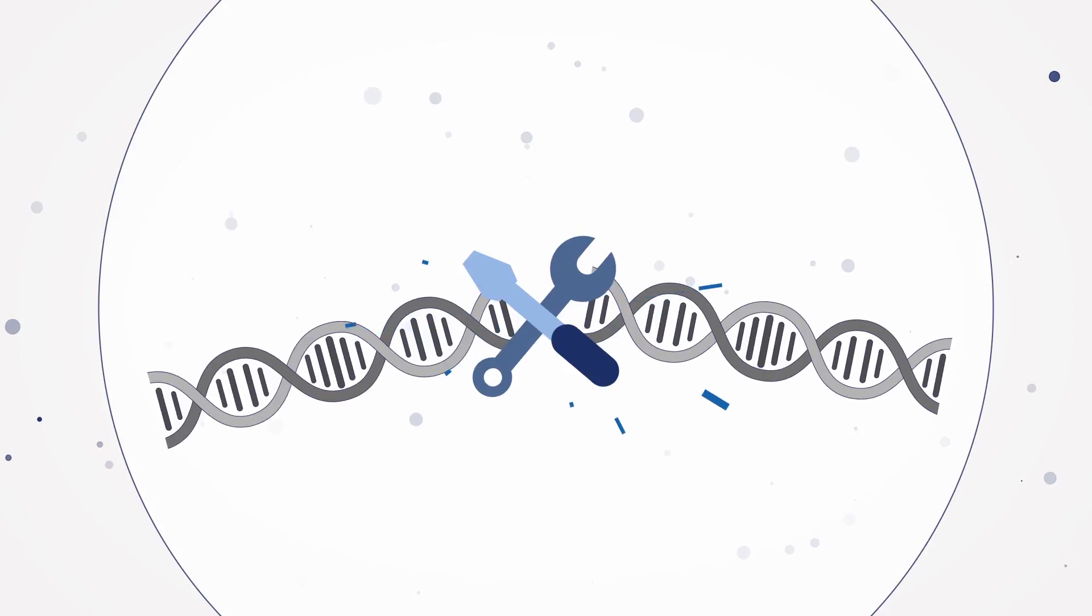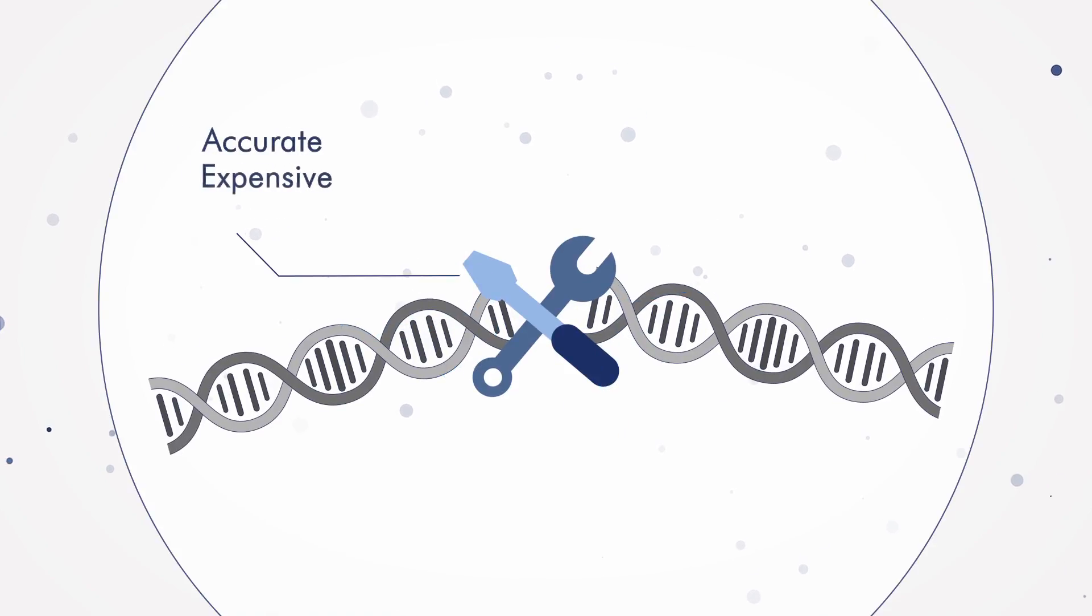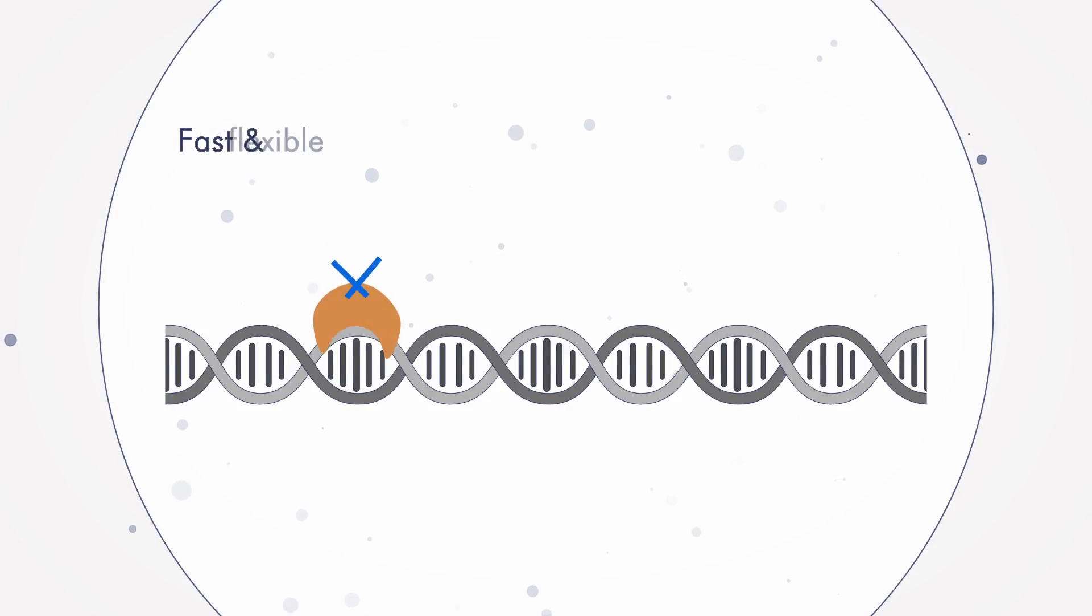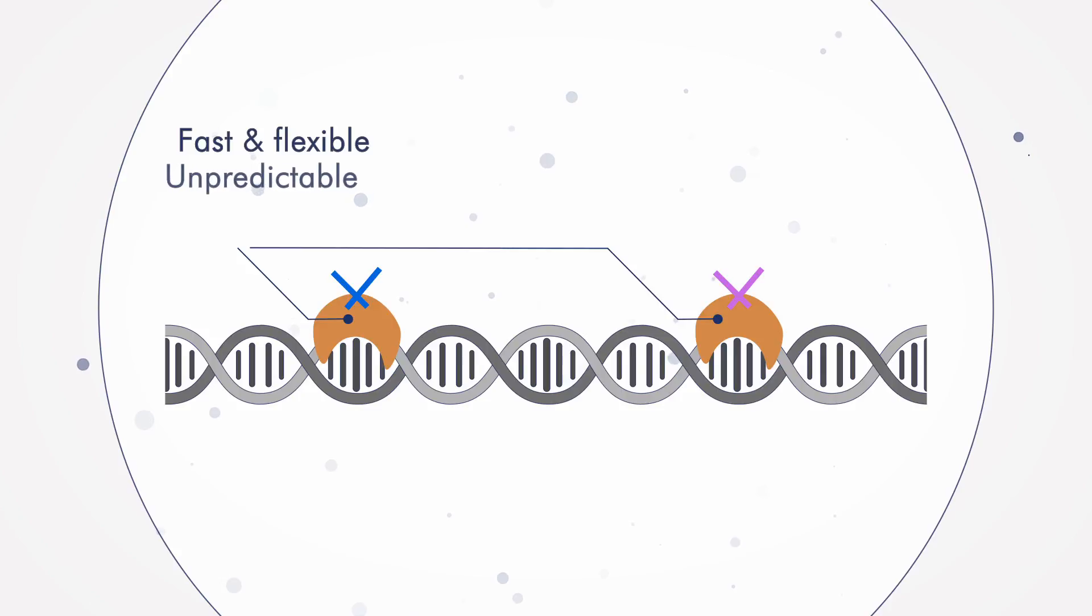While mechanical fragmentation is accurate and produces predictable fragment sizes, it's also expensive and time-consuming and requires a high DNA input and specialized instruments. And while tagmentation is both fast and flexible, its sensitivity to input material makes it unpredictable. Moreover, enzymes used for tagmentation can lead to sequence bias.